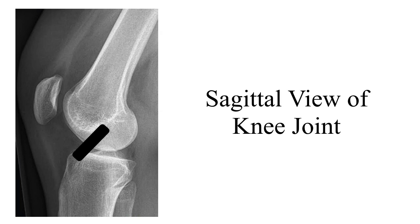As seen in this radiograph, the black structure is the anterior cruciate ligament, which extends from the anterior part of the intercondylar eminence of the tibia to the posterior part of the lateral femoral condyle. Now coming to the pictorial representation of the sagittal view of the knee joint.